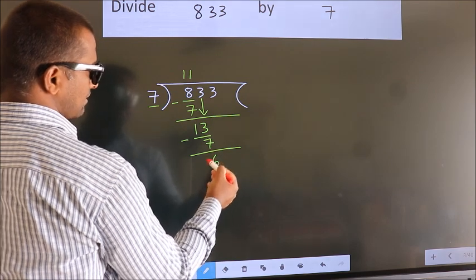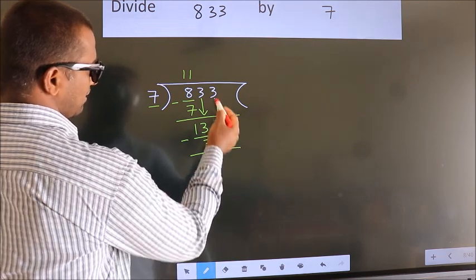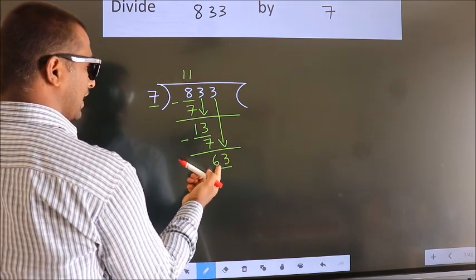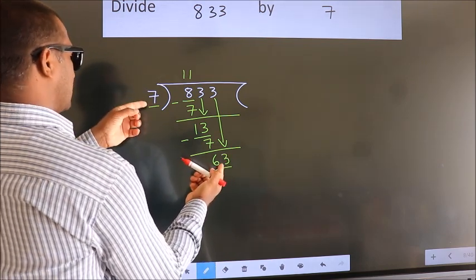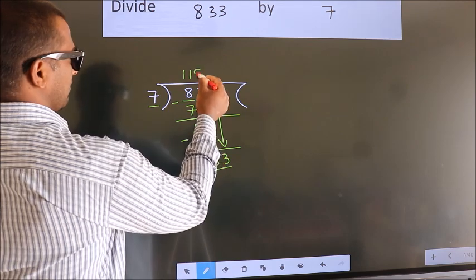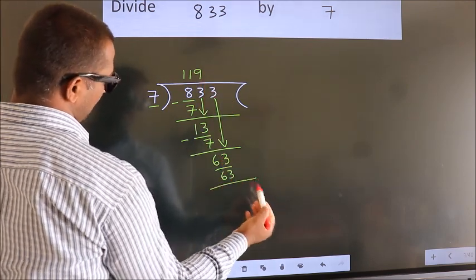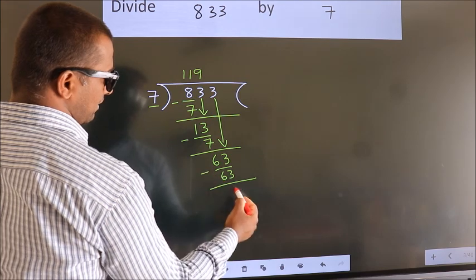After this, bring down the beside number. So, 3 down, making 63. When do we get 63 in the 7 table? 7 nines is 63. Now we subtract. We get 0.